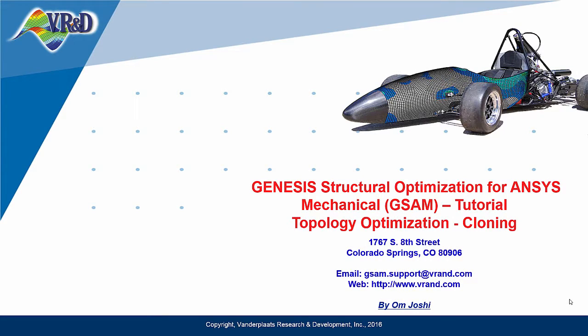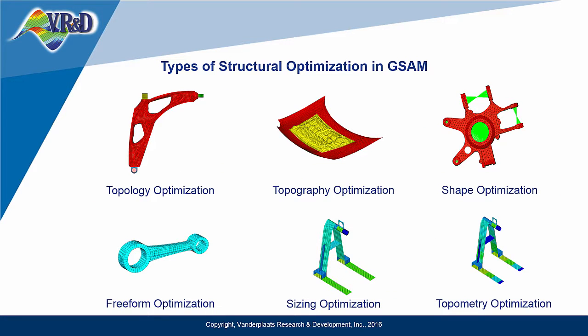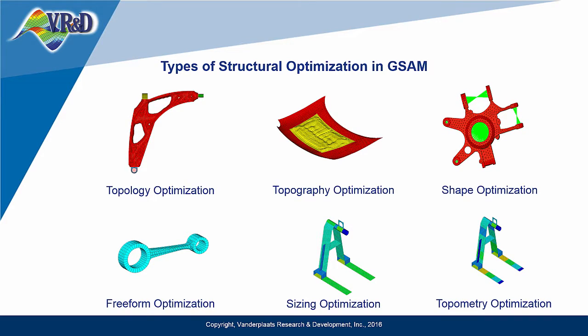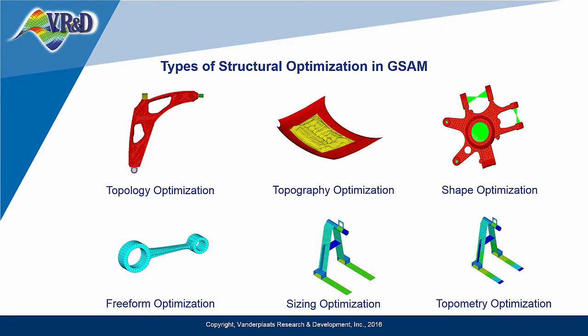The following video will show you how to perform topology optimization and clone the topology over multiple design regions in the same model by using Genesis Structural Optimization for ANSYS Mechanical, or GSAM. This video is intended for Genesis Topology Optimization for ANSYS Mechanical, or GTAM users as well. First, I will set up the topology optimization for one region and then clone it onto other regions to obtain the similar topology.